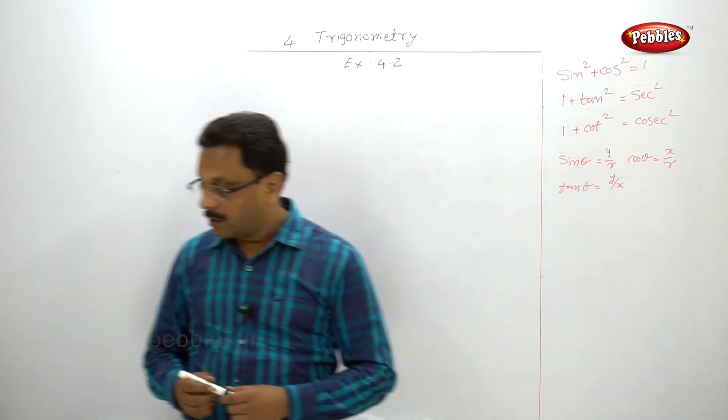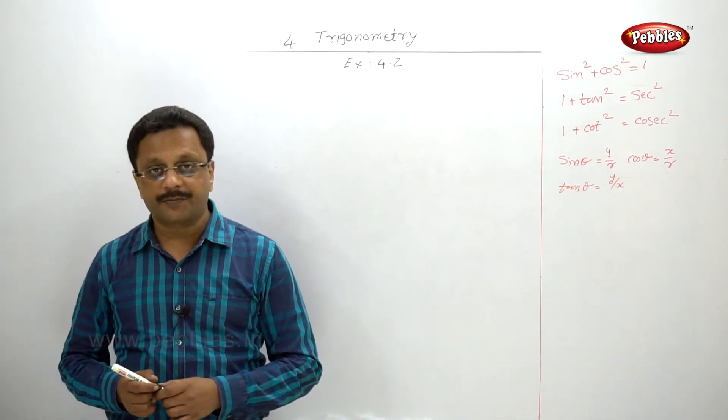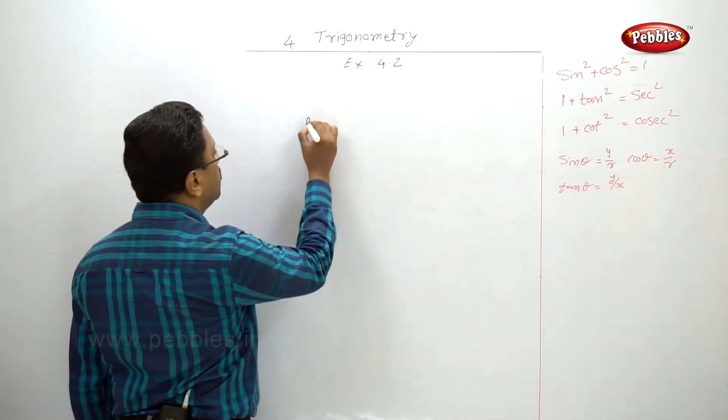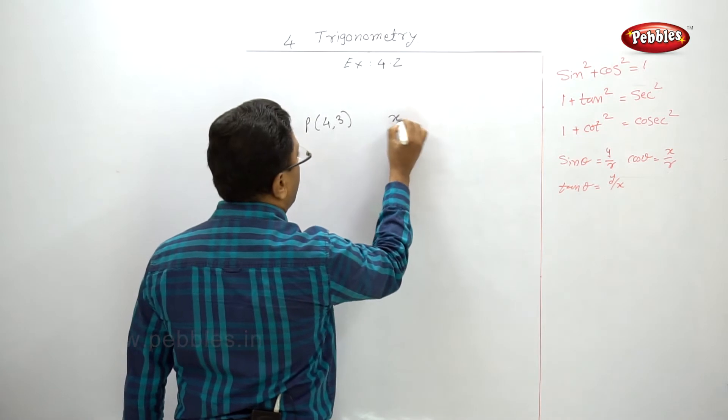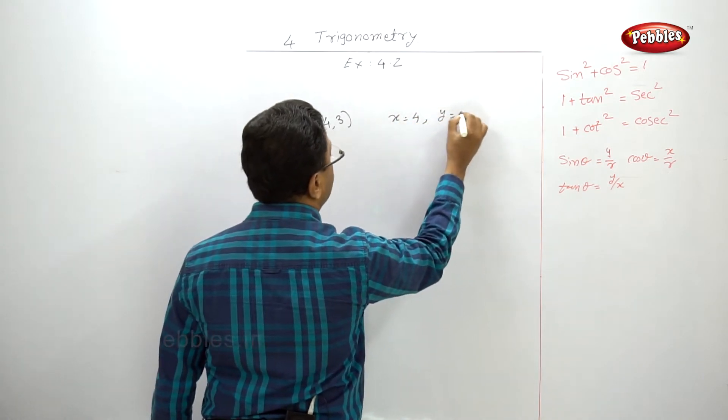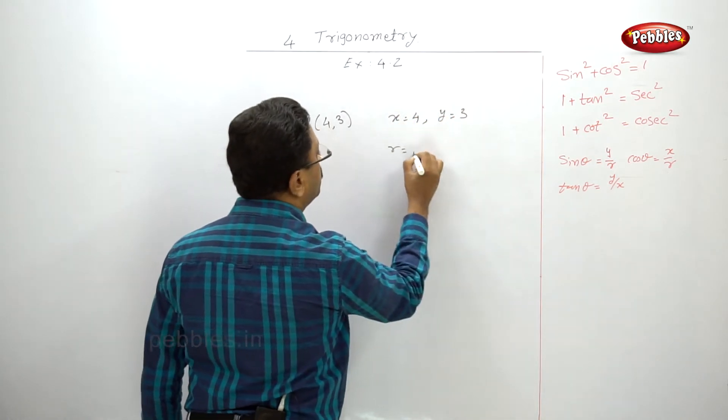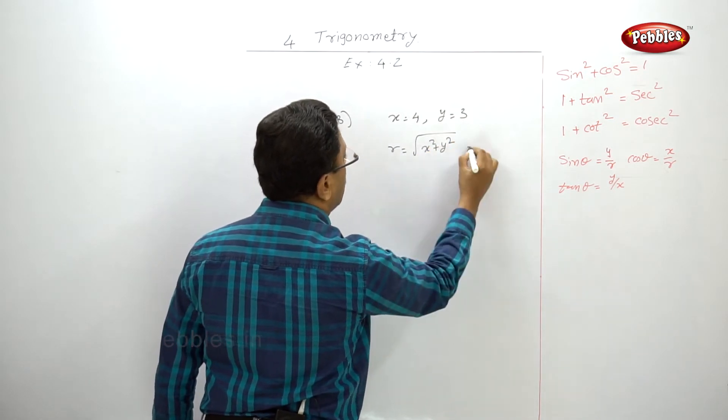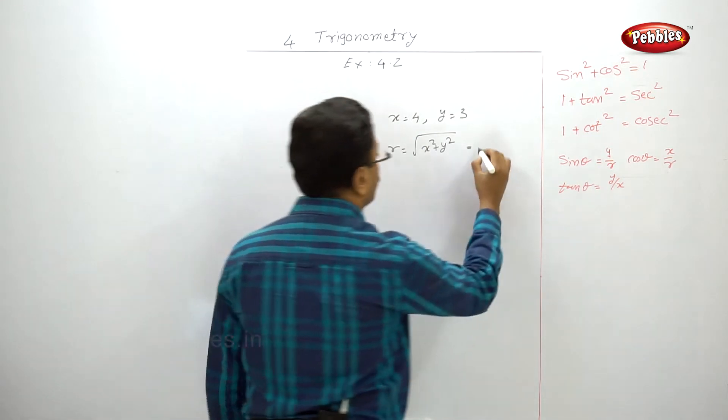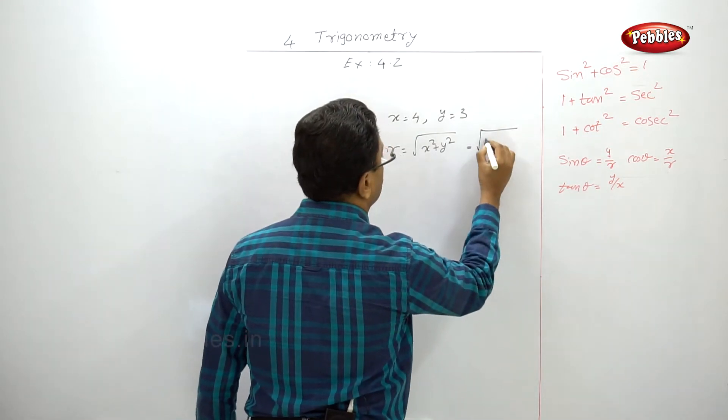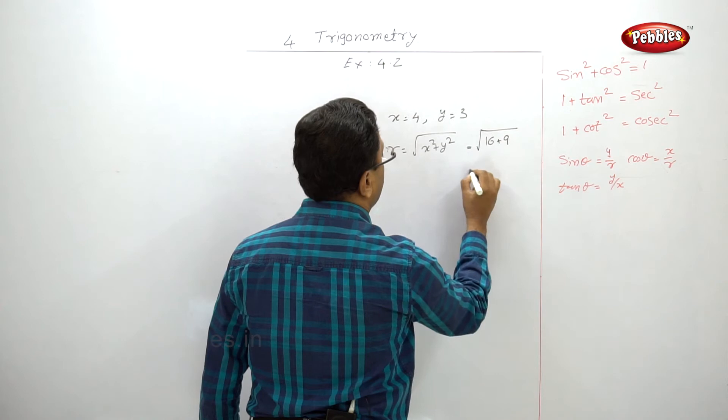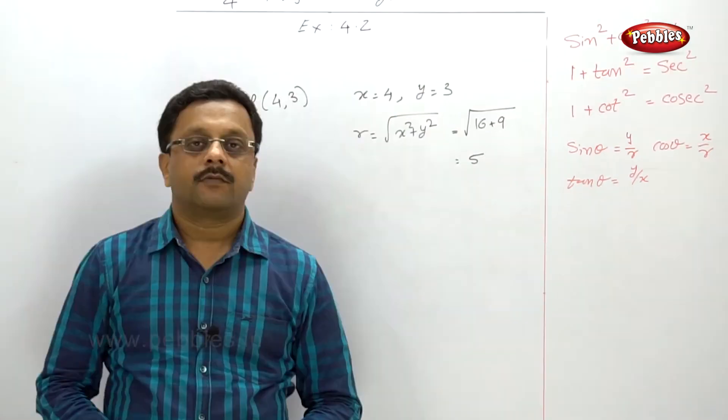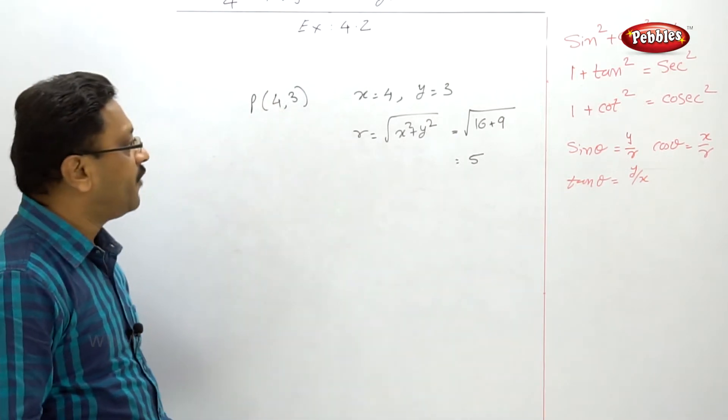First they are given (4, 3). When they are given (4, 3), that means x = 4 and y = 3. And r = √(x² + y²), so r = √(16 + 9) = 5. So r = 5 in this case.